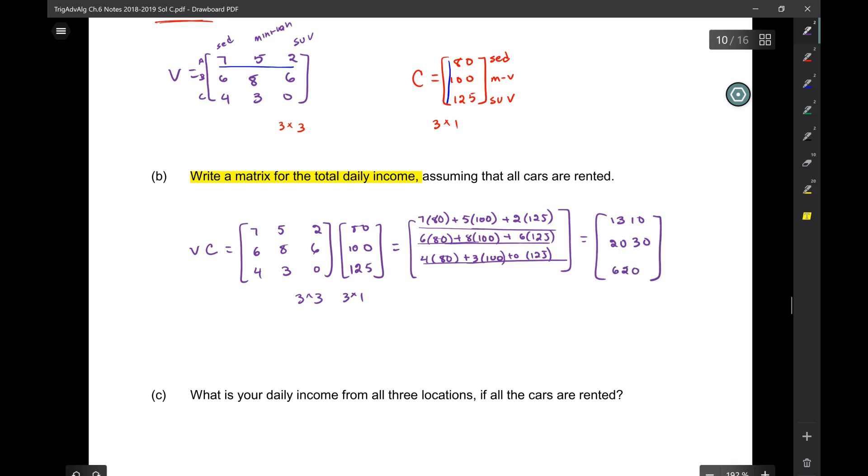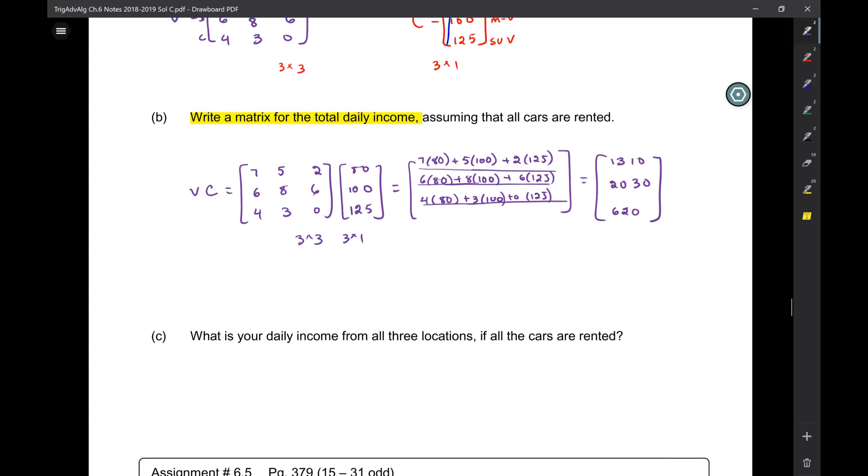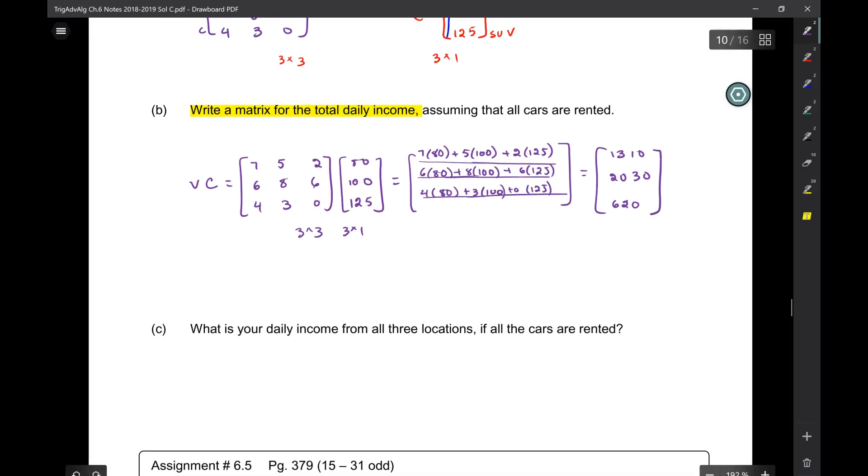All right, so what does this mean? Right, so this is the money from location A if you rent all of them, from location B, and from location C.